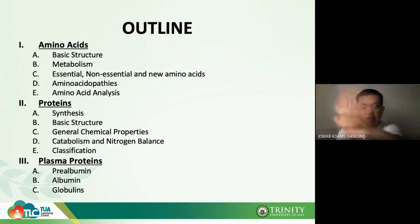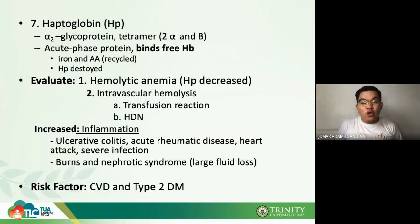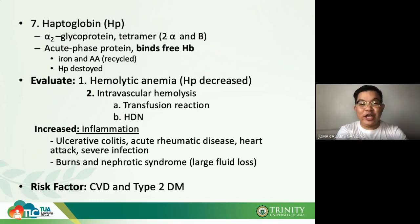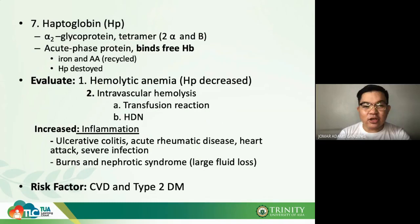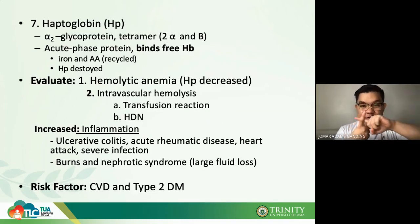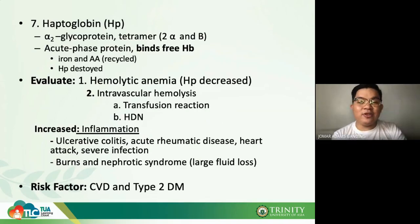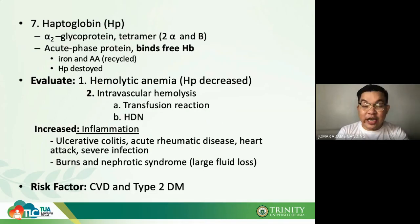Number seven is haptoglobin, abbreviated HP. Haptoglobin is found in the alpha-2 region of your electrophoretic pattern — it is an alpha-2 glycoprotein. It is a tetramer with two alpha and two beta subunits. It is a positive acute phase reactant, and it binds with hemoglobin (Hb). Your Hb is your hemoglobin.